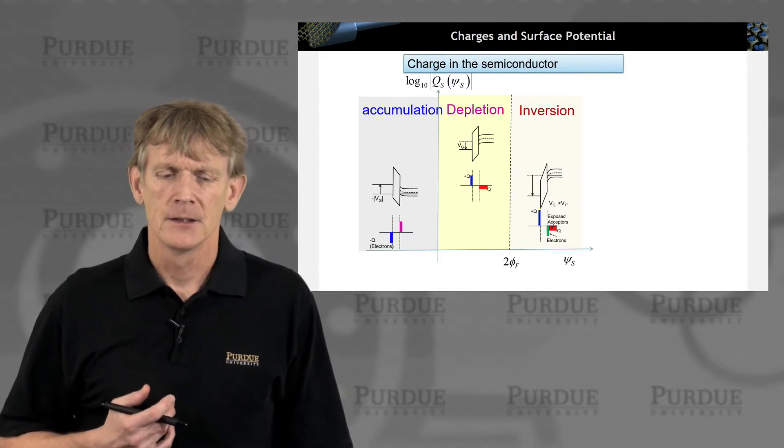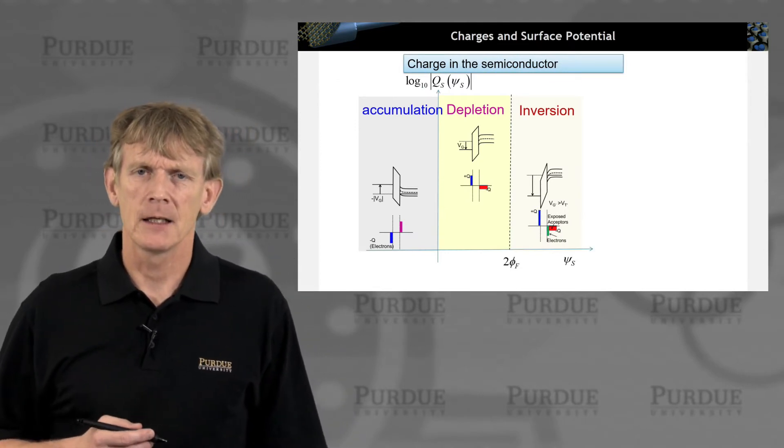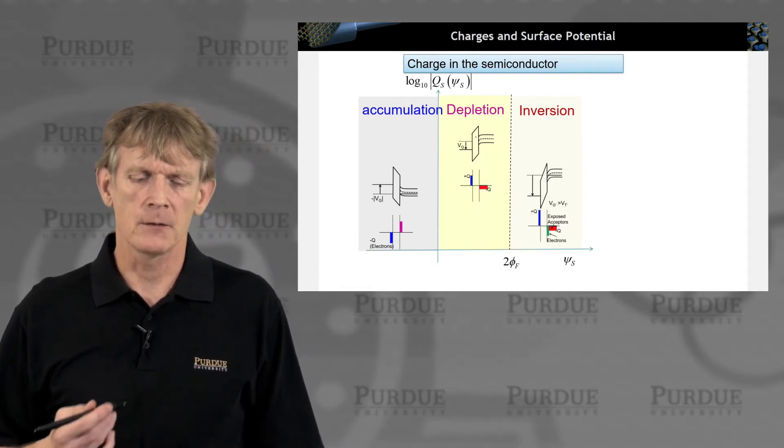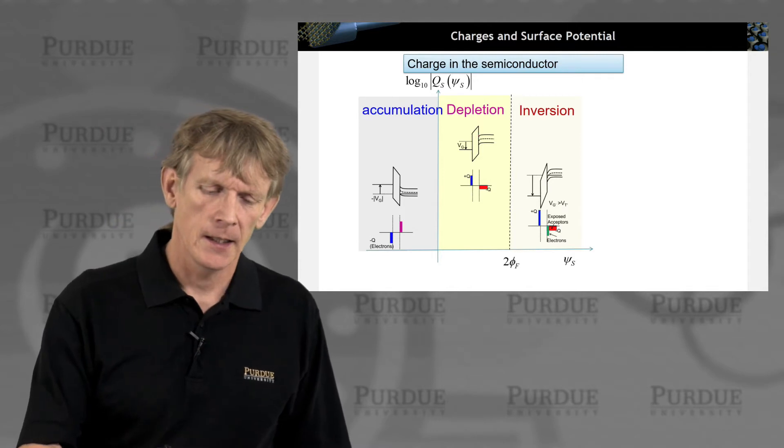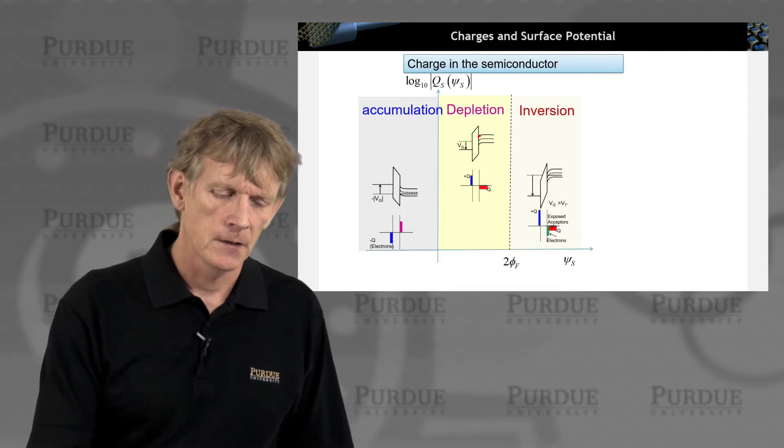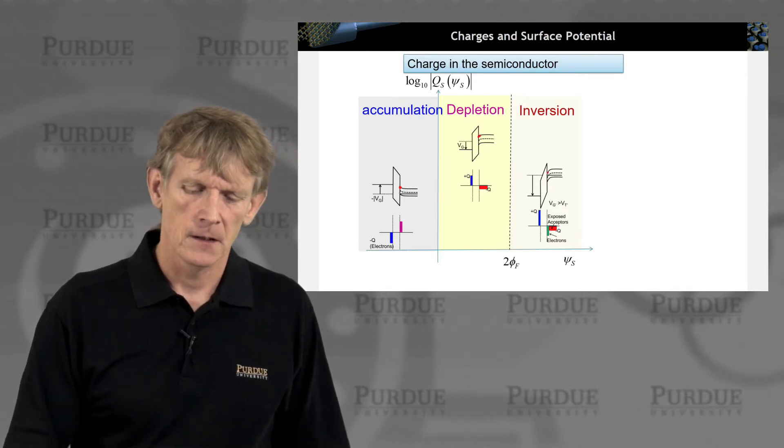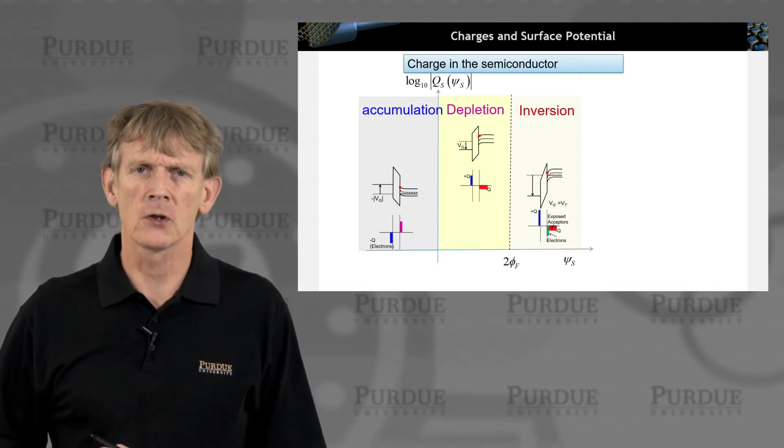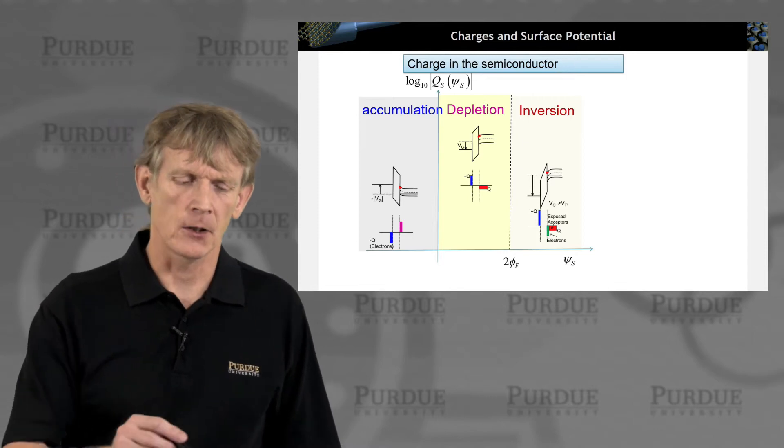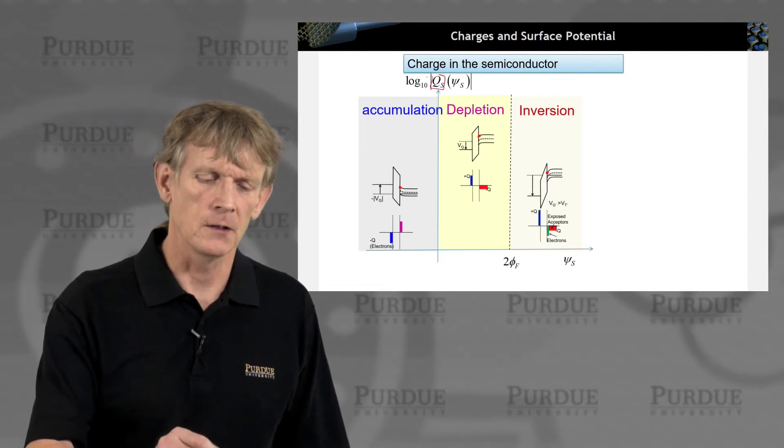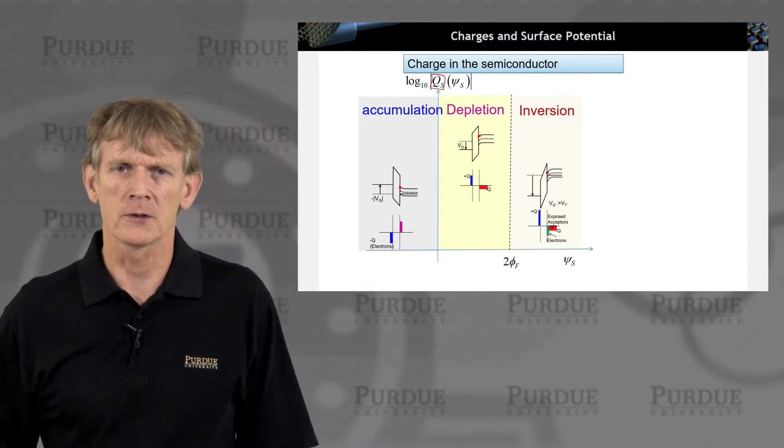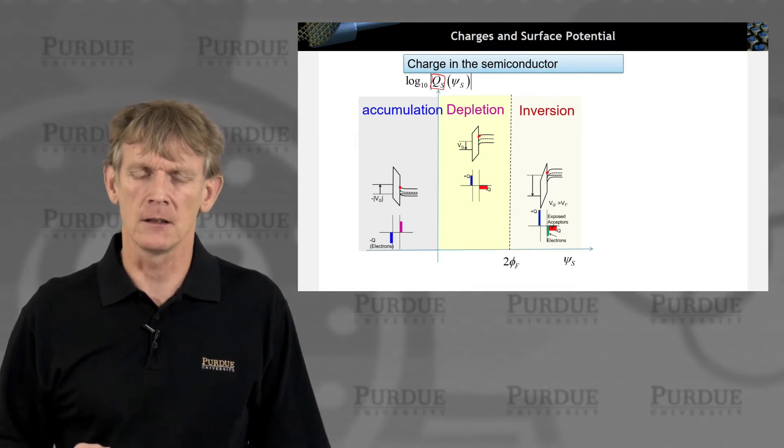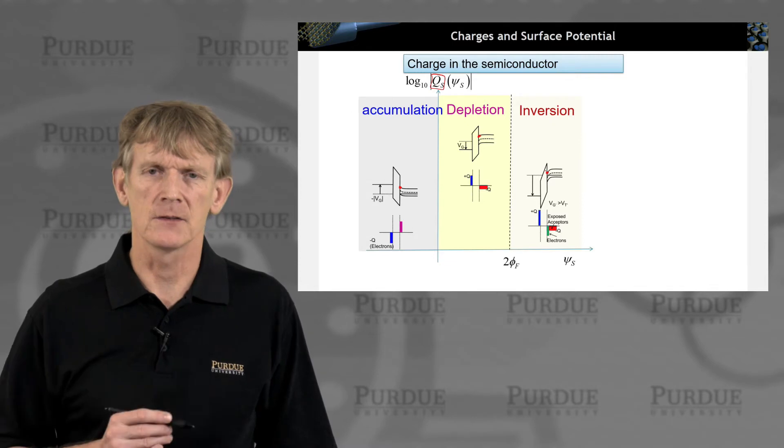So we had considered these three regions, accumulation, depletion, and inversion, and we're going to consider the potential here at the interface. And we want to look at the charge that is sitting in the semiconductor. So again, we're going to a model where we integrate the whole charge, and we're going to plot it as a function of potential at this interface.